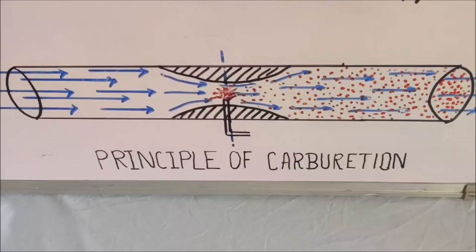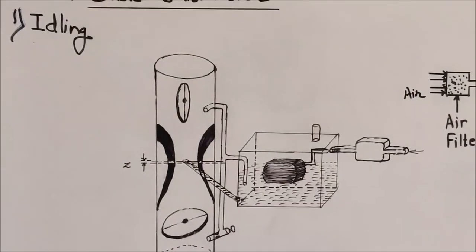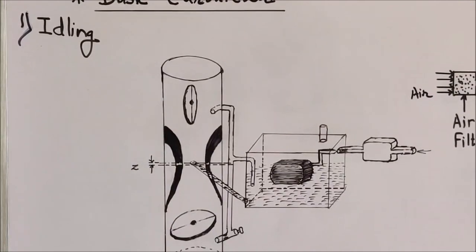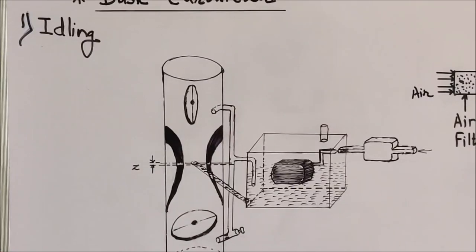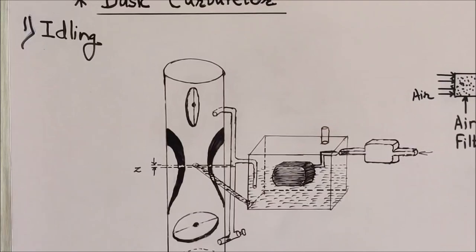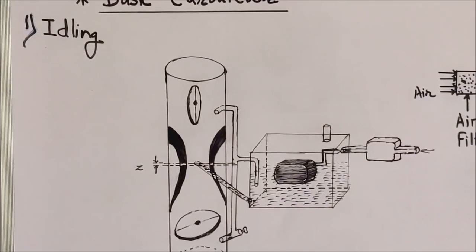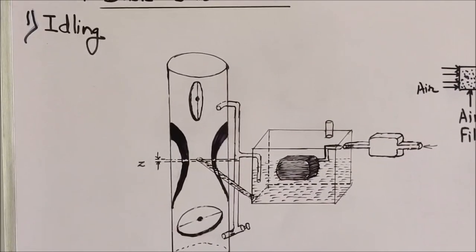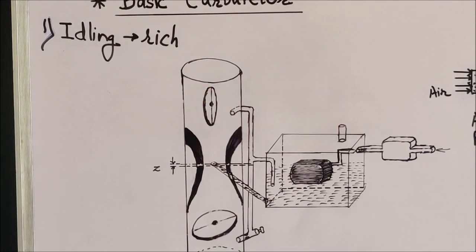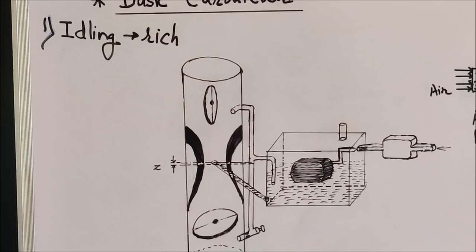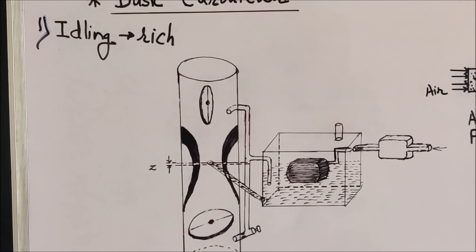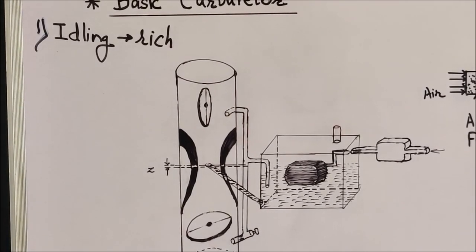Now let us study in detail how a basic carburetor works. We will study the working of the simple carburetor based on different working requirements of the engine. The first working requirement is the idling condition — when the engine is running just to overcome friction losses. The requirement here is a rich air-fuel mixture. To get a rich mixture, you provide less amount of air compared to the fuel, relative to the stoichiometric ratio.